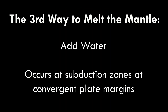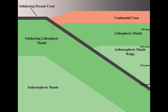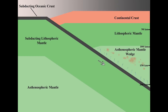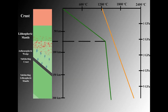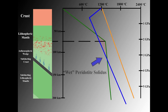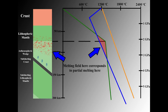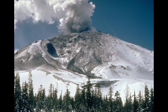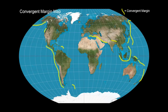The third way to melt the mantle is by adding water, as in the case of subduction zones at convergent plate margins. The plate on the left is subducting beneath the plate on the right. The subducted plate releases water as it gets deeper in the earth. This water rises and is incorporated into the overlying mantle, lowering its melting temperature. This is represented on the diagram by changing the dry peridotite solidus to a wet peridotite solidus. Wet peridotite melts at much lower temperatures than dry peridotite, allowing a normal geotherm to intersect it, causing melting in the mantle wedge above the subducted plate. Mount St. Helens is an example of a volcano fed by magma generated in a subduction zone. Here's the global distribution of convergent margins. This style of melting only happens with plate tectonics.